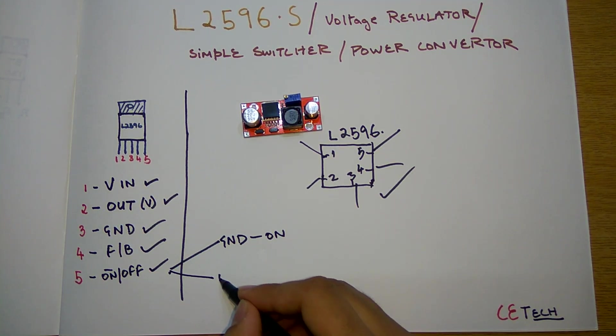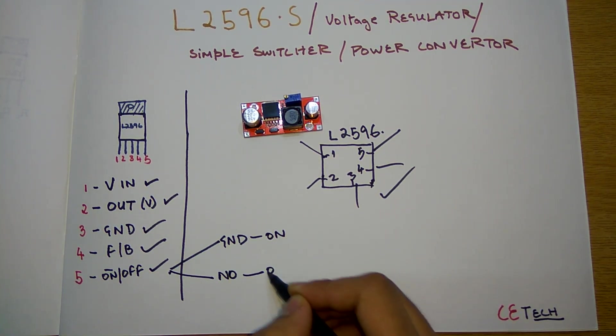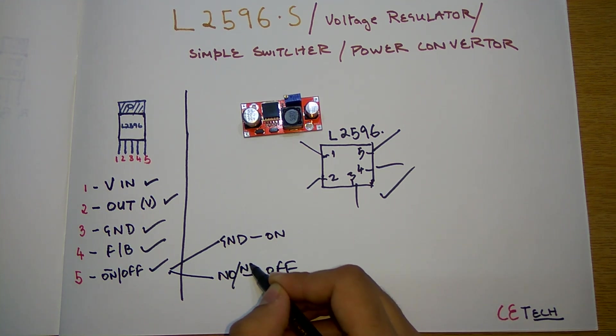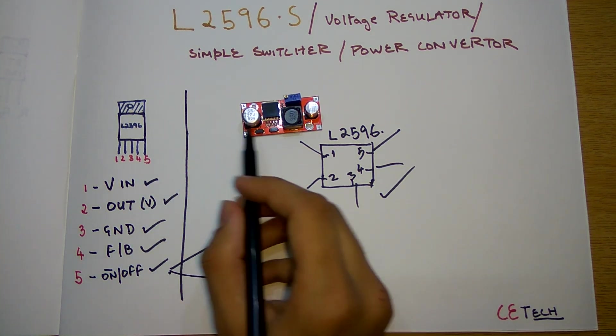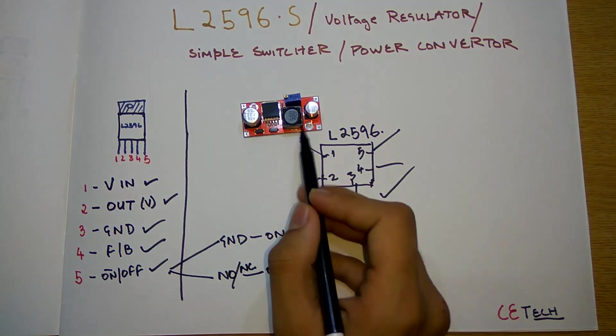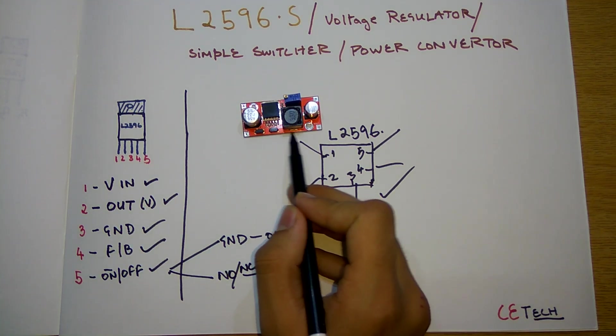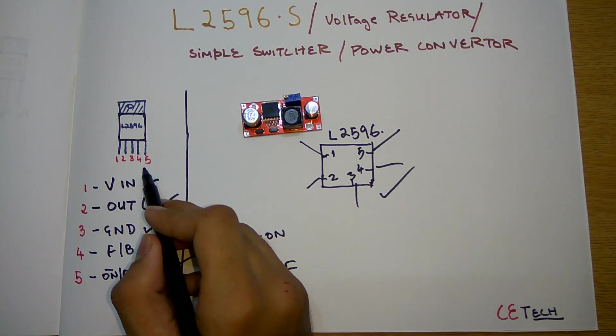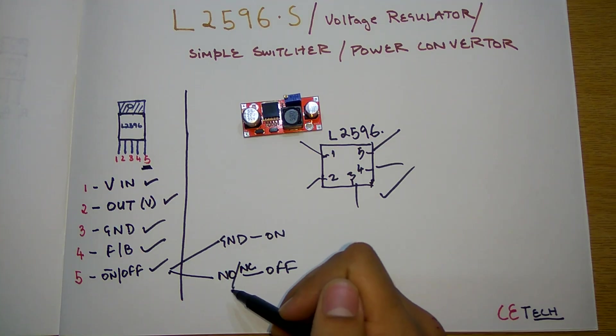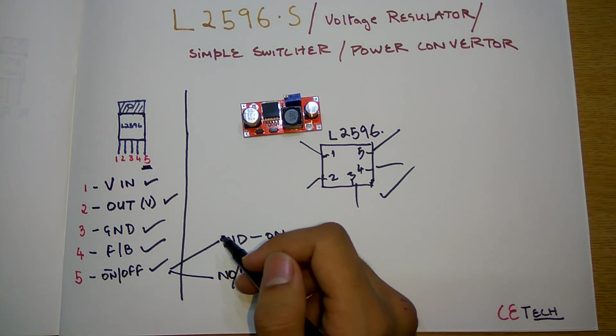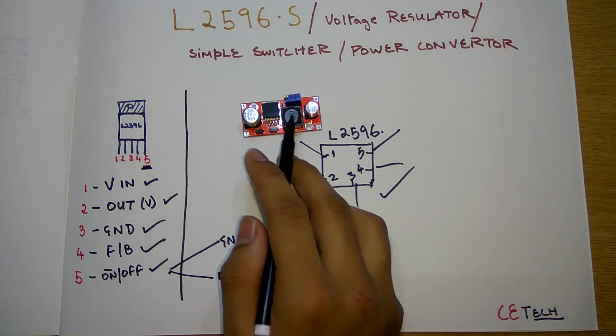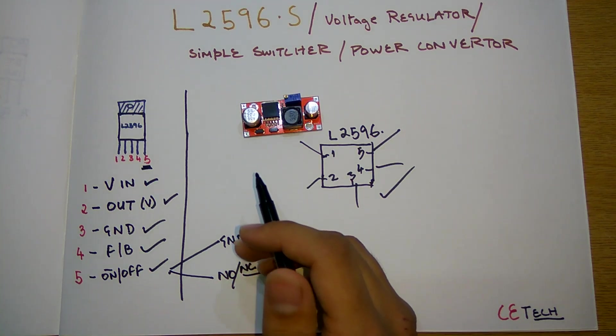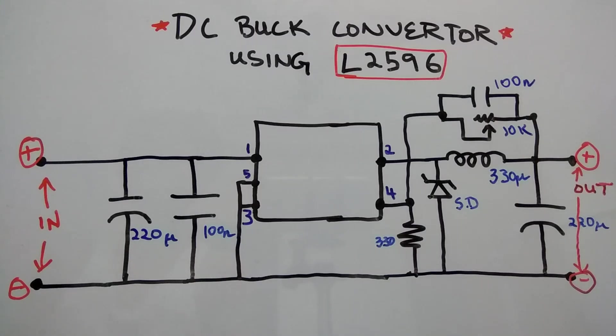On or off - we have to just connect this pin to ground for on, and no signal or no connection for off. So this pin, which is the fifth pin, is generally connected to the ground and we will check this out in the circuit diagram itself. Let's move to the whiteboard for the circuit diagram and so-called reverse engineering.